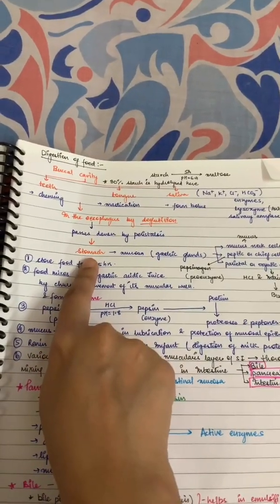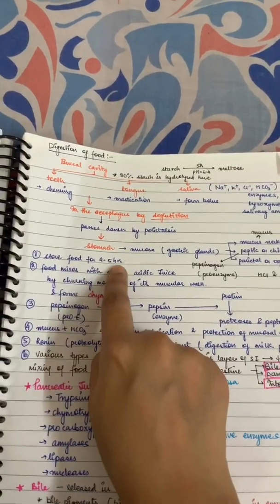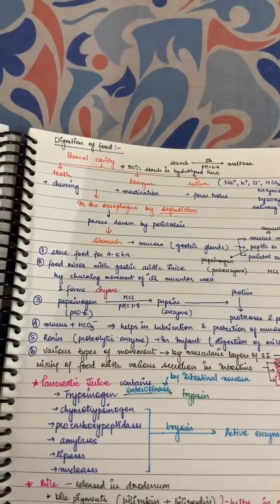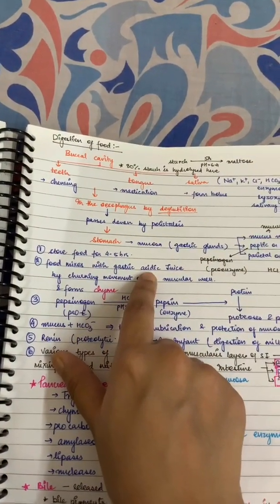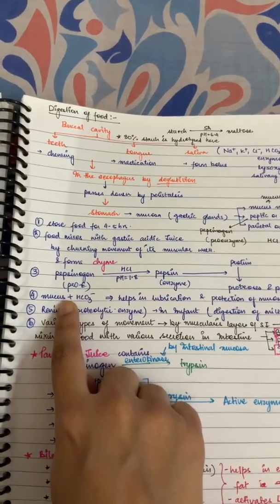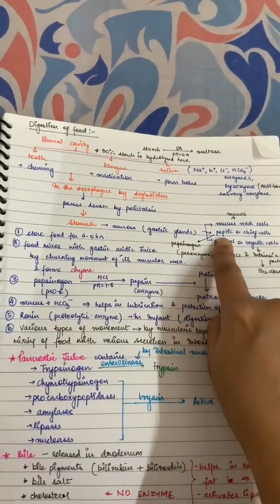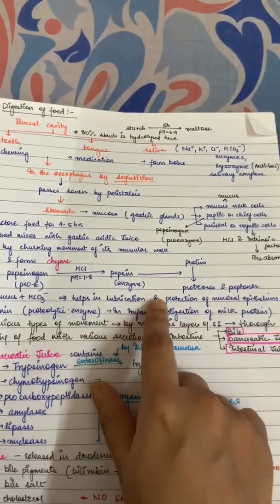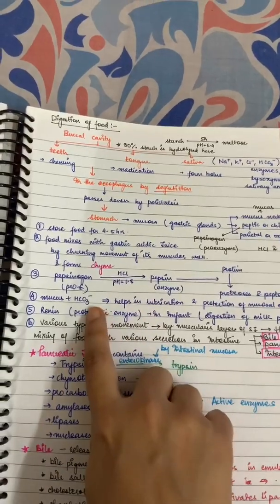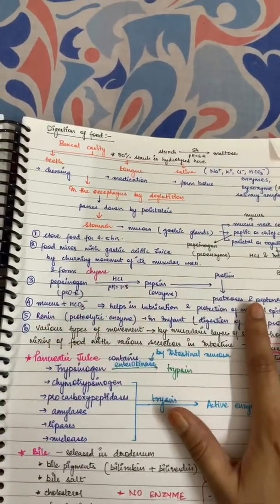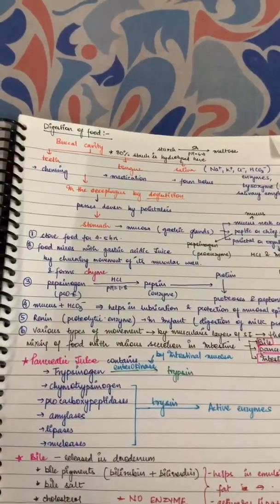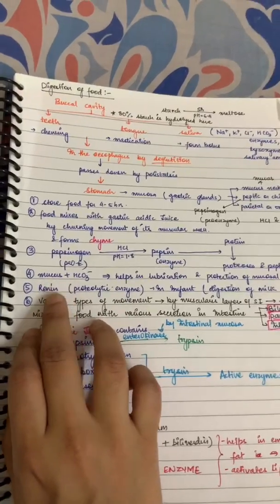Food is stored in the stomach for 4–5 hours, depending on what we eat. Food mixes with gastric juice by the churning movement of the muscular wall to form chyme. Mucus and bicarbonate secreted from mucus glands help in lubrication and protection of the mucosal epithelium from the highly acidic HCl. The mucus layer covers and neutralizes so that the mucosal lining does not get perforated.